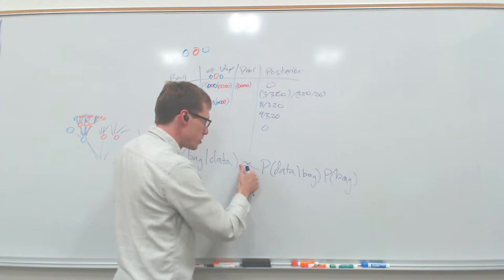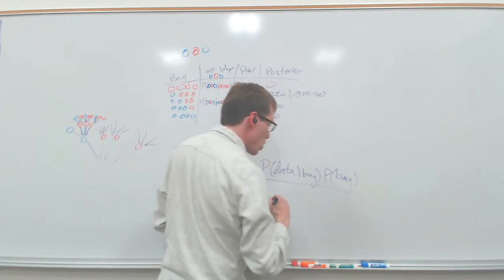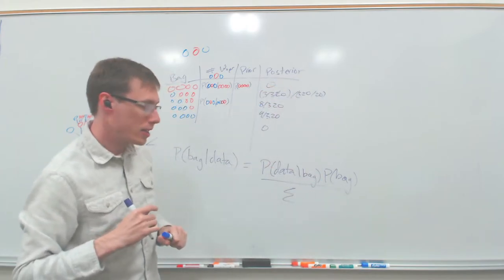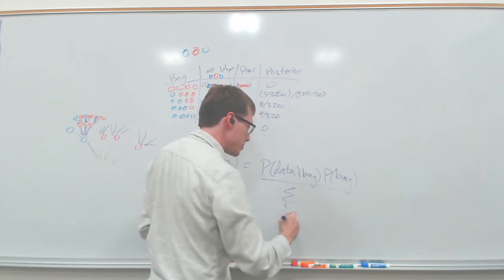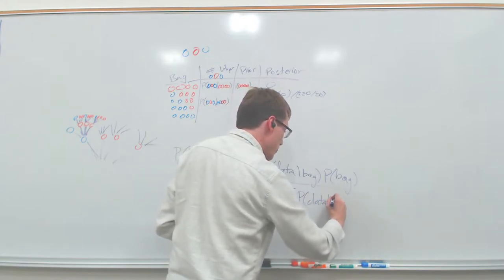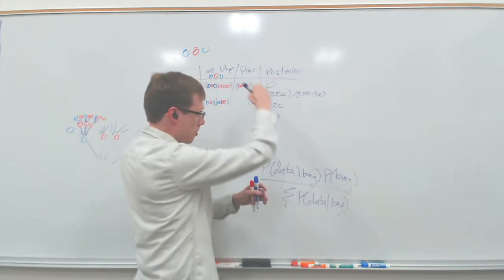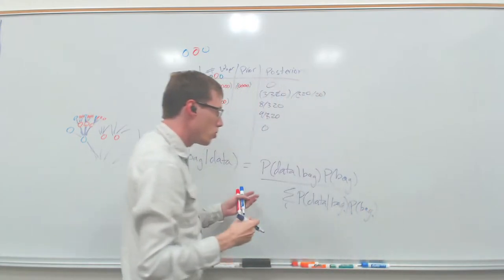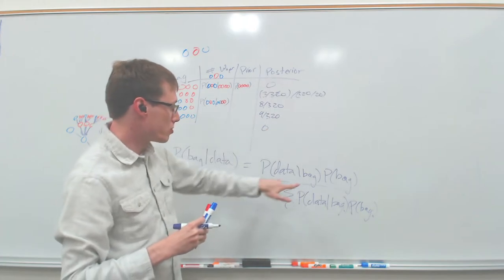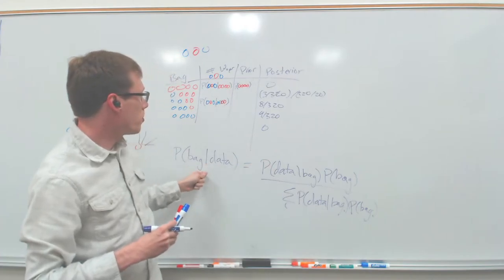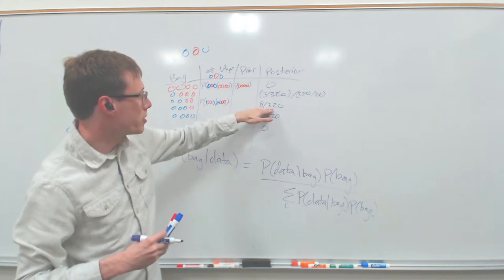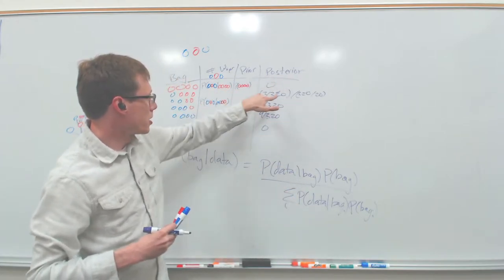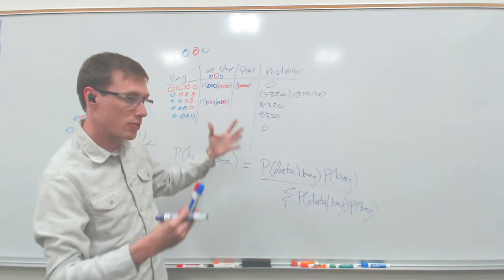To turn this into an actual probability, we divide by the sum over all possible bags of [P(data | bag_i) × P(bag_i)]. That sum is just the normalization constant. So for any specific bag, we take likelihood times prior, then divide by the sum of all those products. This is just the total ways for each bag, summed across all bags.